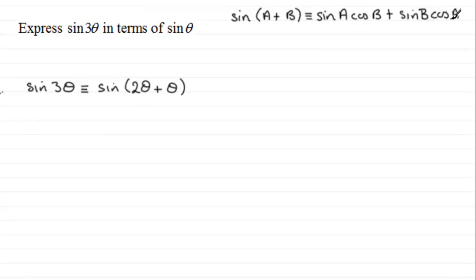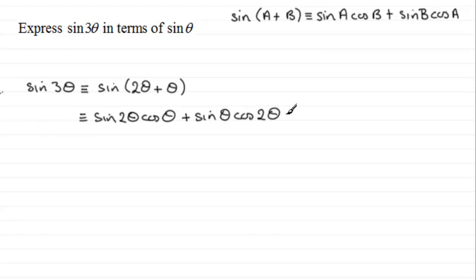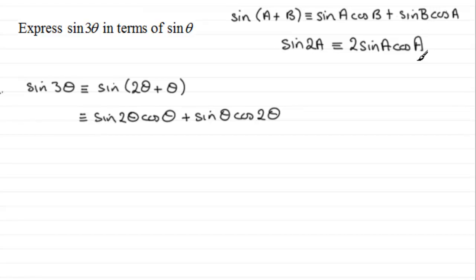Following the identity, this expands to give us sin(2θ)cos(θ) plus sin(θ) multiplied by cos(2θ). Now sin(2θ) is a double angle — we should be familiar with that identity, generally written as sin(2A) = 2sin(A)cos(A).